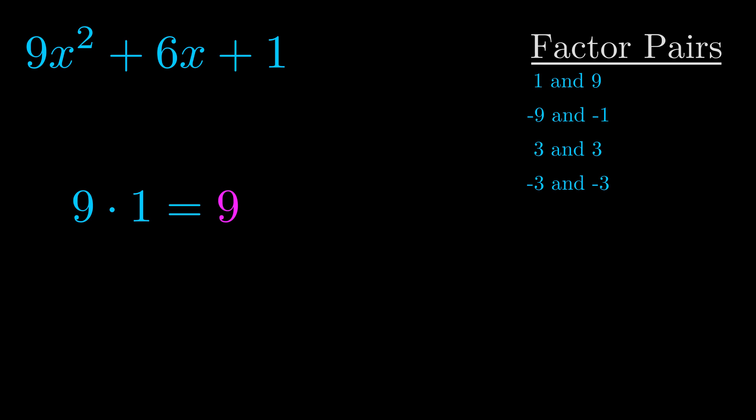The b value is the coefficient on the x term. That's the middle term, the one that we haven't done anything with yet. And really this is the only factor pair that we need.